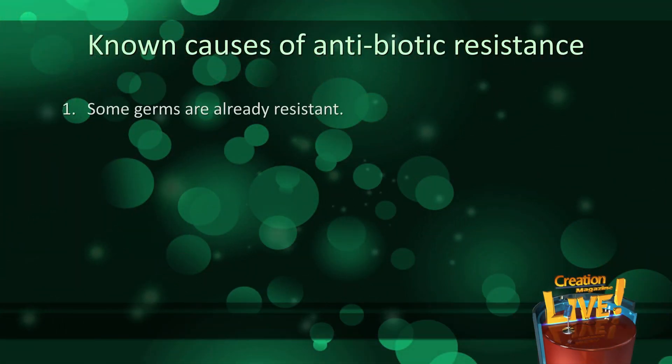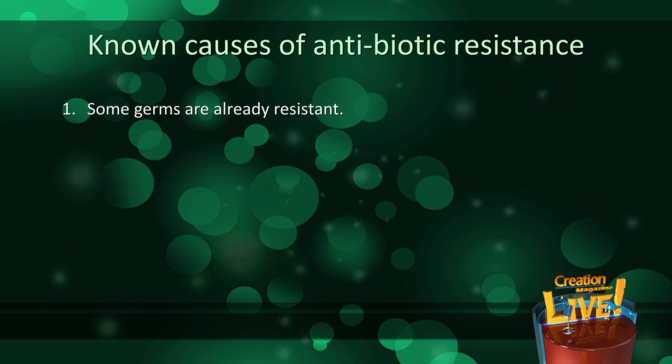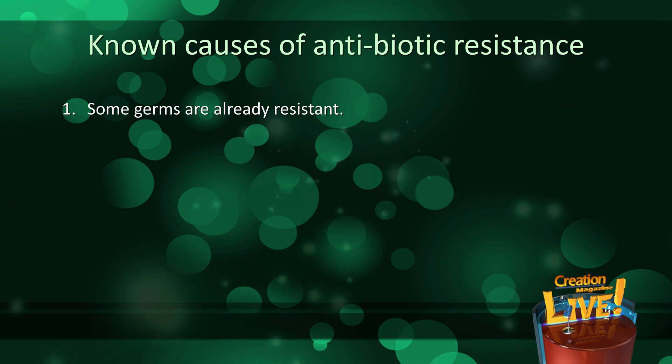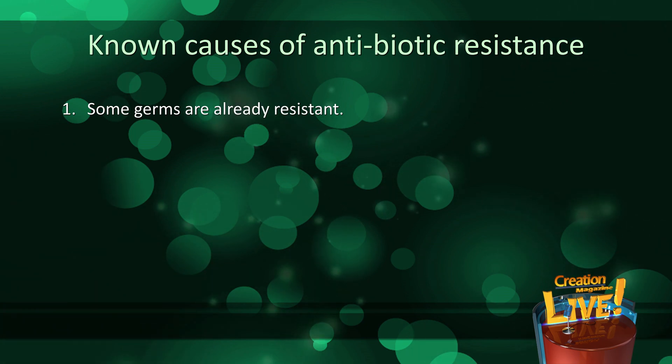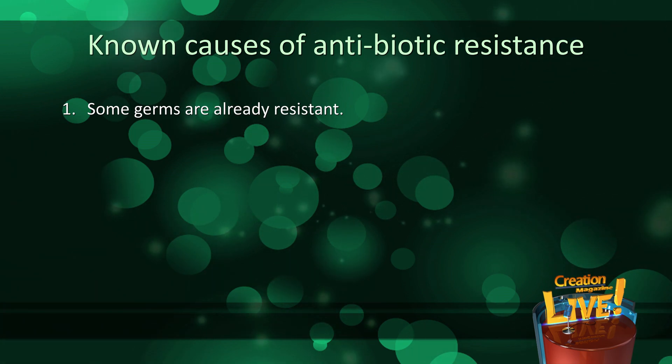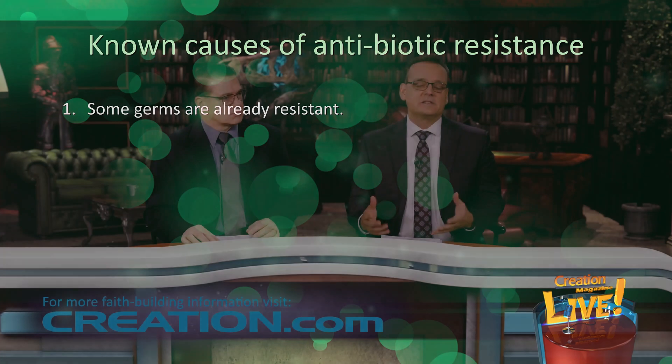Firstly, some germs already had the resistance. Out of a million bacteria, if five already have a feature that makes them resistant to, say, penicillin, then soaking them in penicillin will kill all of them, except for the five.